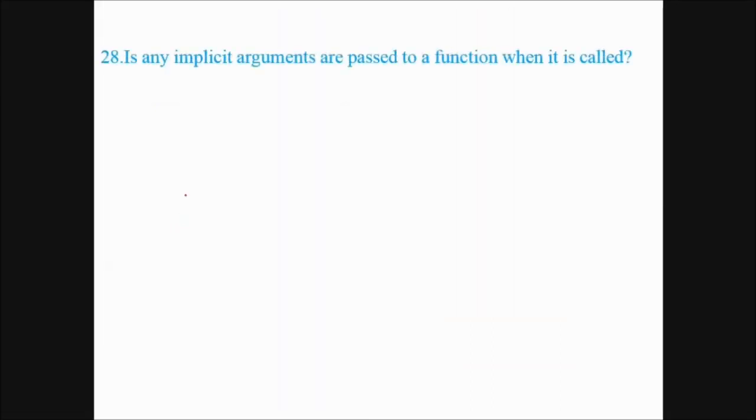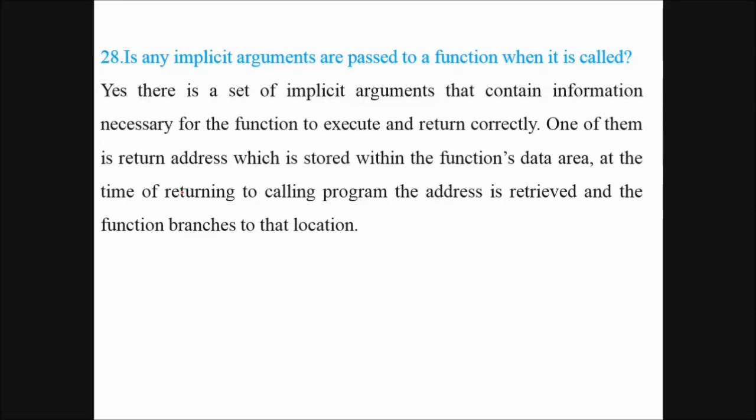Are any implicit arguments passed to a function when it is called? Yes, there is a set of implicit arguments that contain information necessary for the function to execute and return correctly. One of them is return address, which is stored within the function's data area at the time of returning to a calling program. The address is retrieved and the function branches to that location. So these are implicit arguments also.